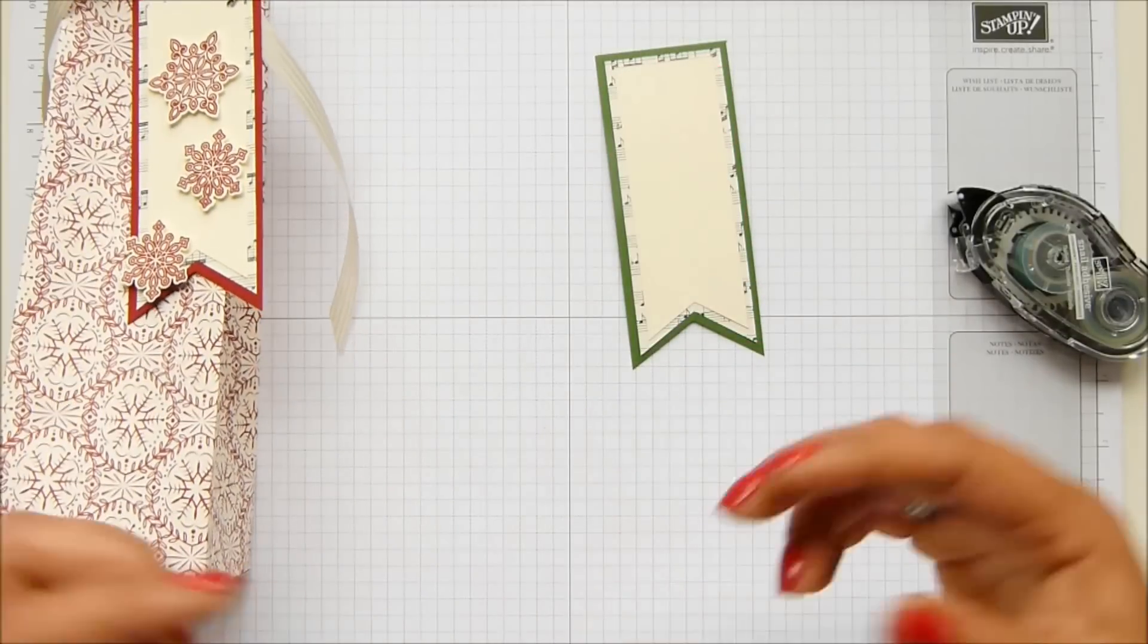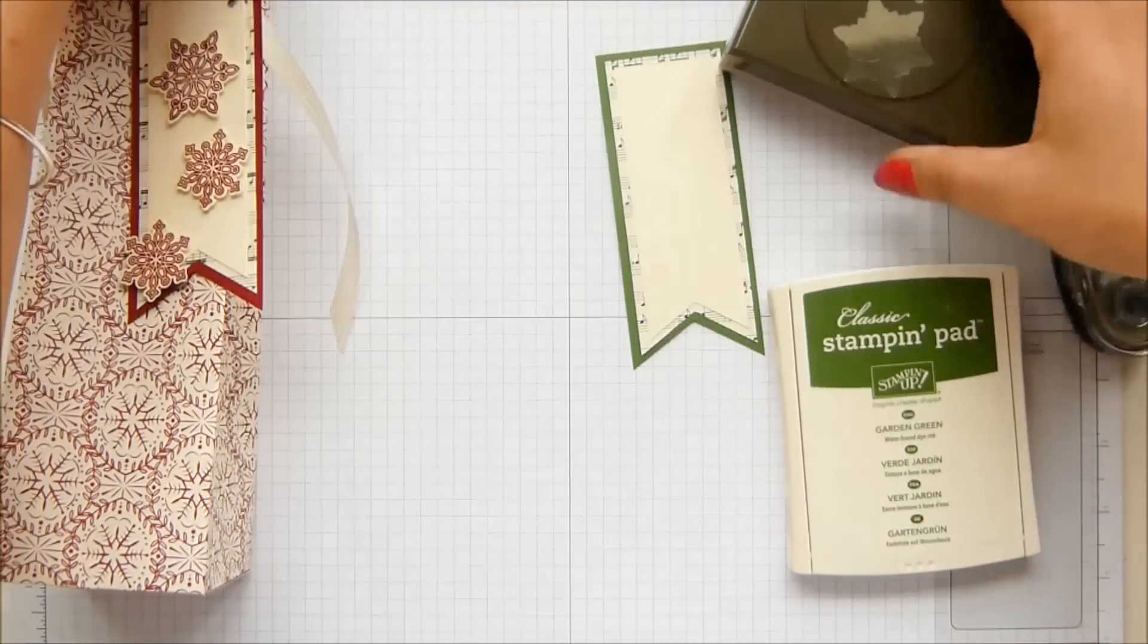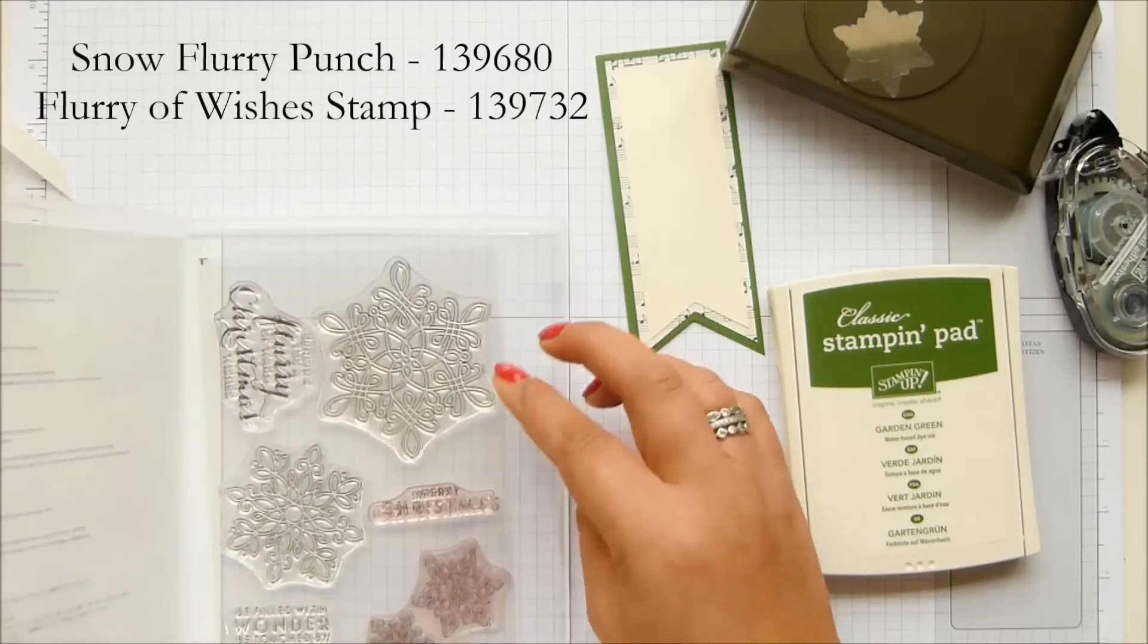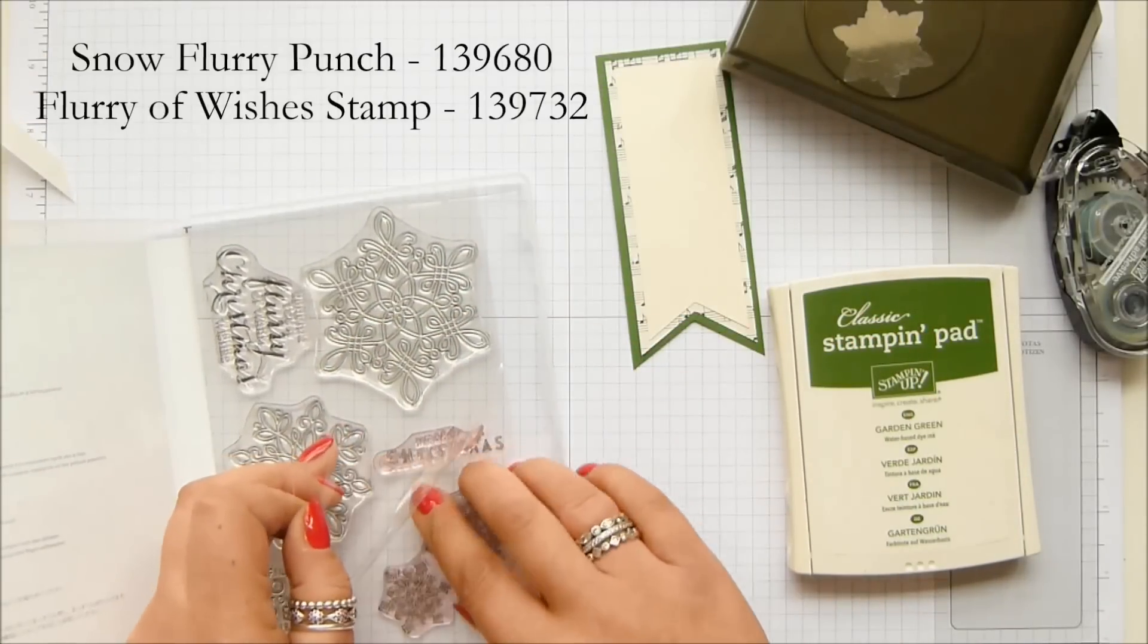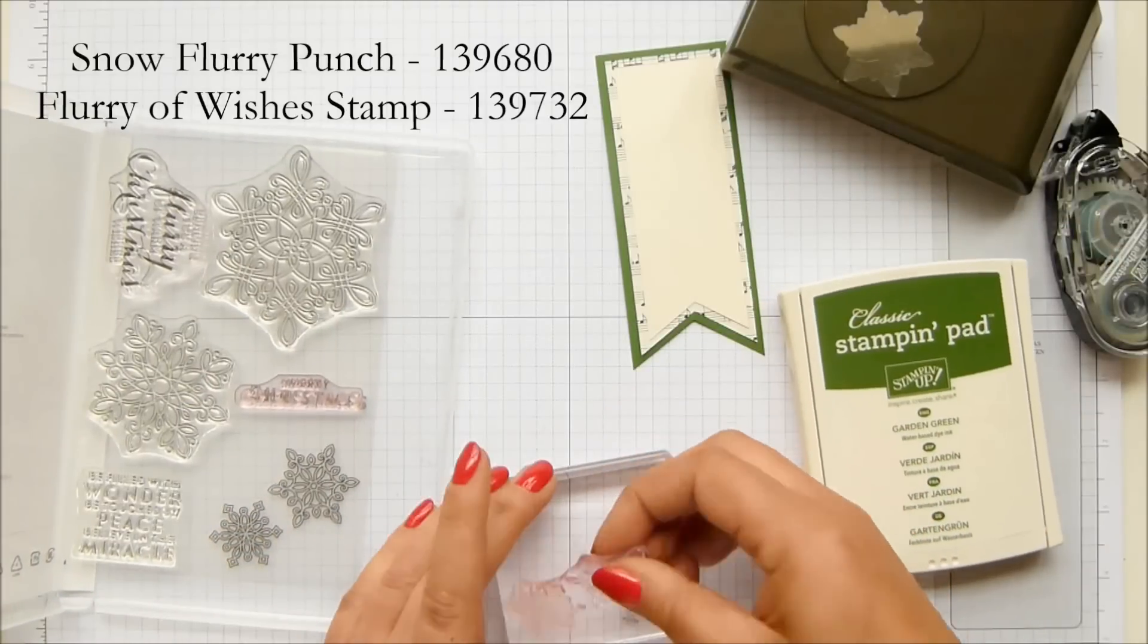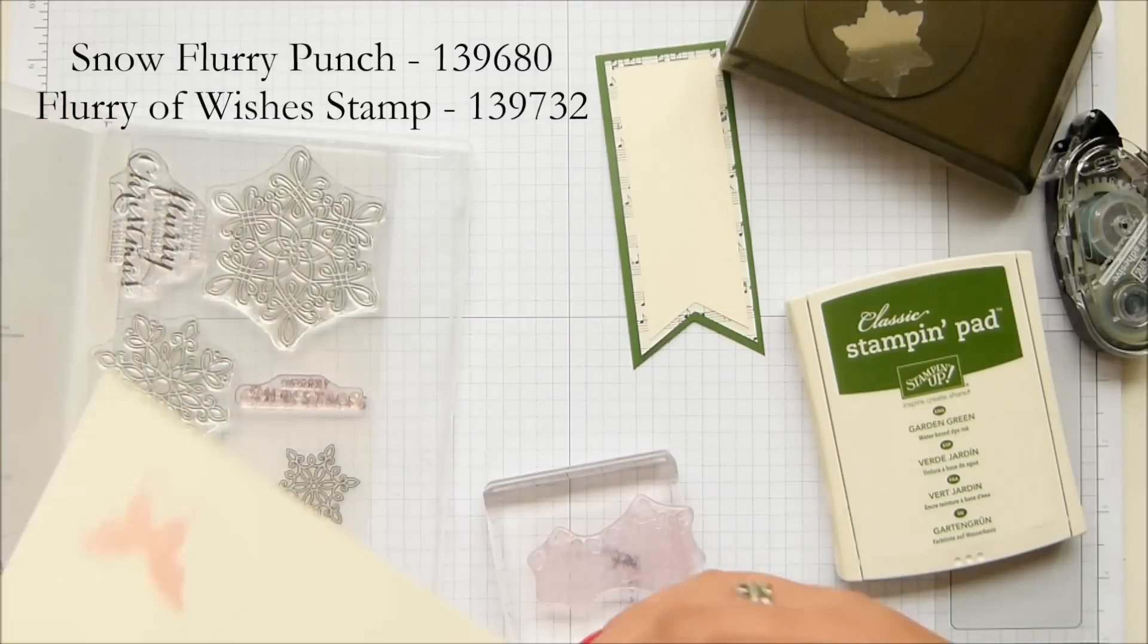We have red snowflakes before. Let's go with green ones because we're going with green. So I've got my festive flurry punch and my flurry of wishes stamp set. And I haven't got any cardstock out, which is really useful. So let's get my block and then grab a piece of vanilla from my scraps bin. That's quite a big bit. That'll do.